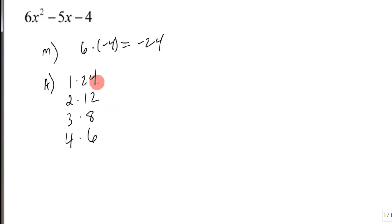Now I need to look for which ones will add or subtract and make negative 5. Well, 1 and 24 can't add or subtract and make that. 2 and 12 can't. 8 and 3 can. Just because you have one that can, you need to check the other ones, because that might not be the right one. And 6 and 4 can't.